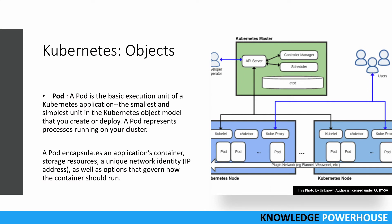The first basic unit is the pod. A container is deployed on a pod. The pod is the basic execution unit of a Kubernetes application - the smallest and simplest unit in the object model. It can be created, deployed, or destroyed, and represents a running process on your cluster. A pod encapsulates the application's container, storage resources, a unique network IP address, and configuration options governing how the container should run. You can have thousands of pods running.